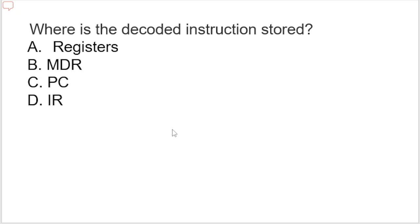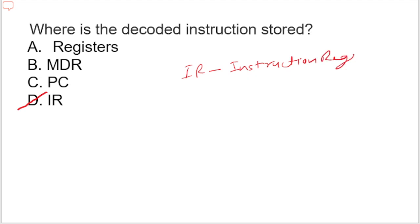Next question: where is the decoded instruction stored? Options are register, MDR, PC, IR. The correct answer is option D, IR. IR is the Instruction Register. It holds the instruction code — instructions read from memory are placed in the Instruction Register.